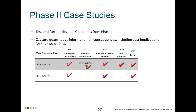In phase two, we tested and further developed the guidelines from phase one. One objective was to capture quantitative information on consequences, including developing cost opinions for two utilities — utility B and C — for implementing control strategies and mitigating unintended consequences. We conducted four quarterly source-to-tap profiling events and two rounds of bench testing of different control strategies, two rounds to capture performance under different seasonal conditions.